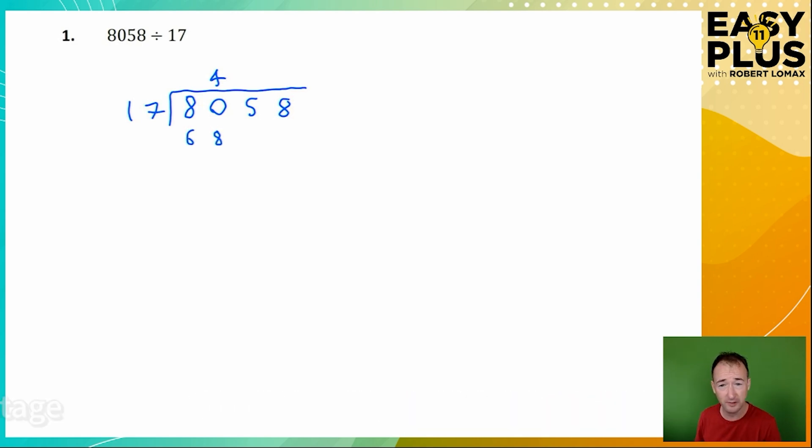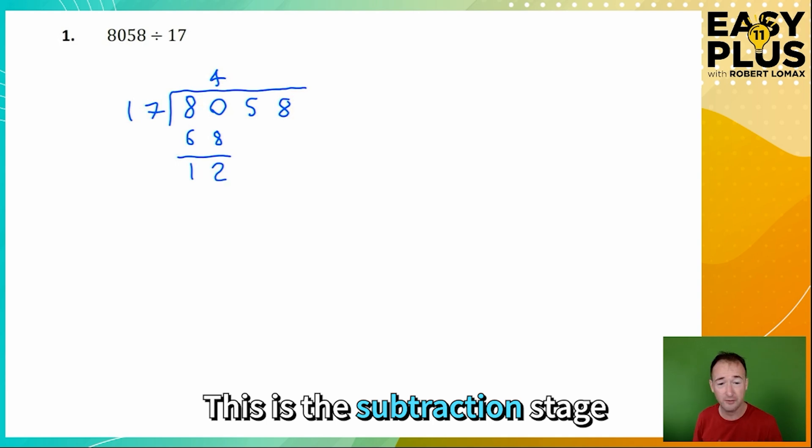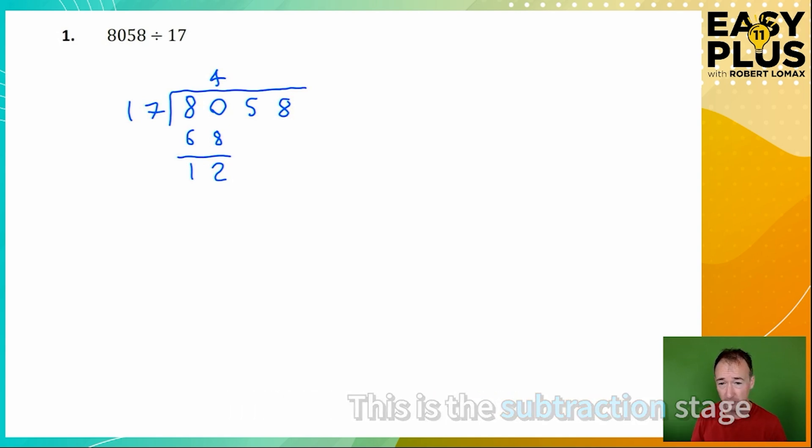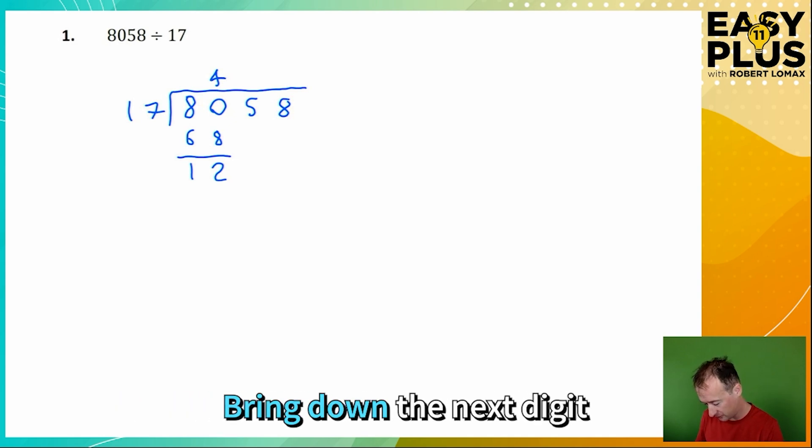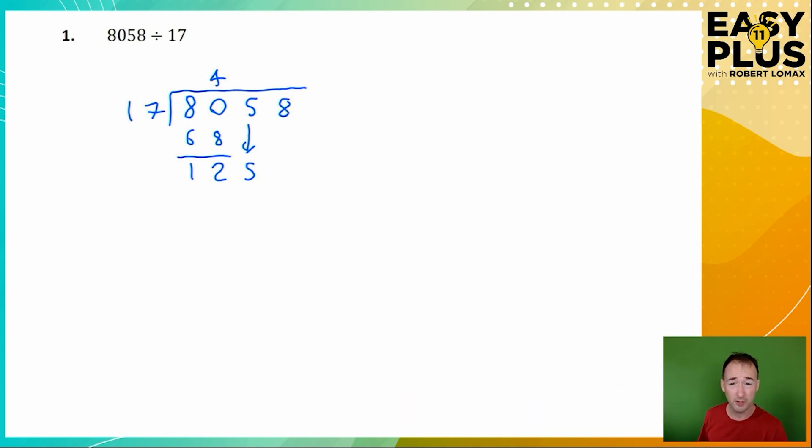Then we draw a line and we subtract. I haven't actually done a formal subtraction process there, because it's quite clear that 80 minus 68 is 12. Now the next thing we need to do is bring down the next digit, which is 5. You don't need to draw that down arrow in, I've just added that for clarity at this stage. And now we go through the process again, but with 125.